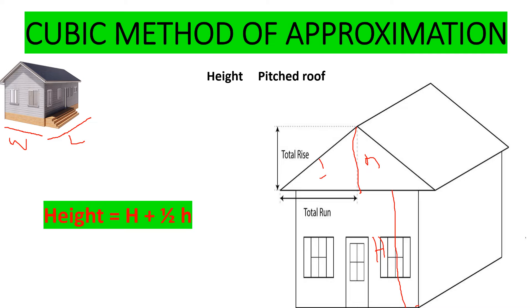We are going to take half of the small h. So our total height for the pitched roof will be H plus half of small h. That will be our total height: H plus ½h.